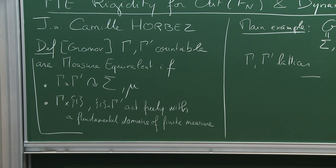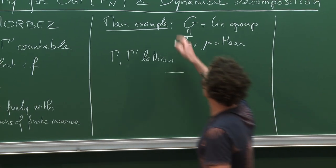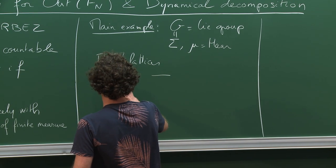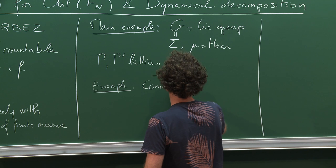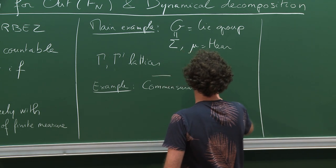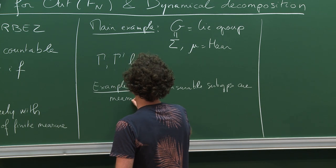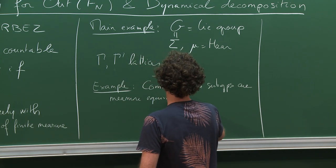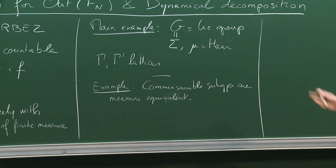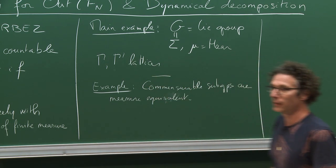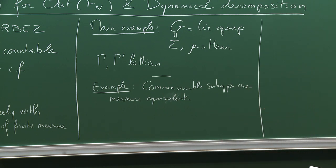Another example, which is simpler, is commensurable subgroups. Two commensurable subgroups are measure equivalent — that's just the example where the regroup is a discrete group and you have two finite index subgroups, which are lattices in this context. So measure equivalence generalizes commensurability.